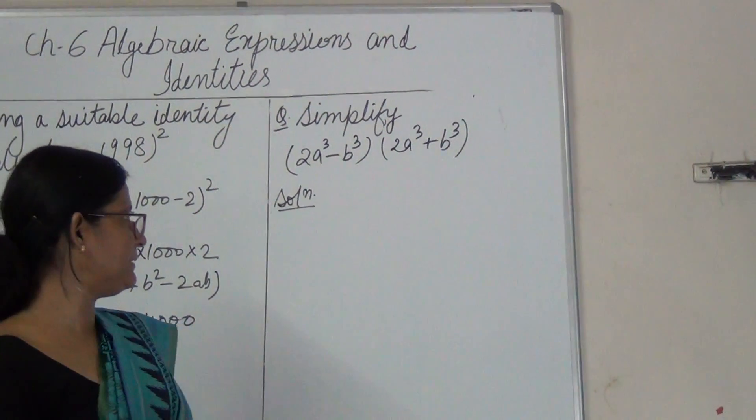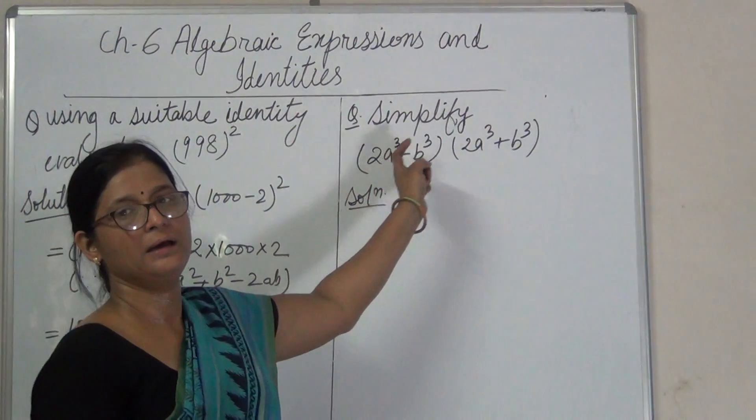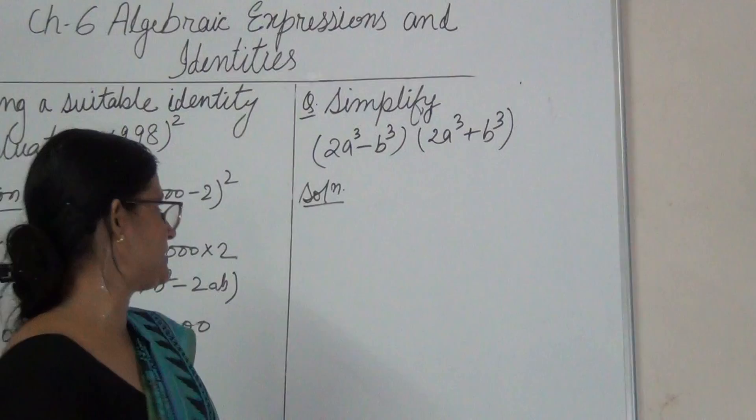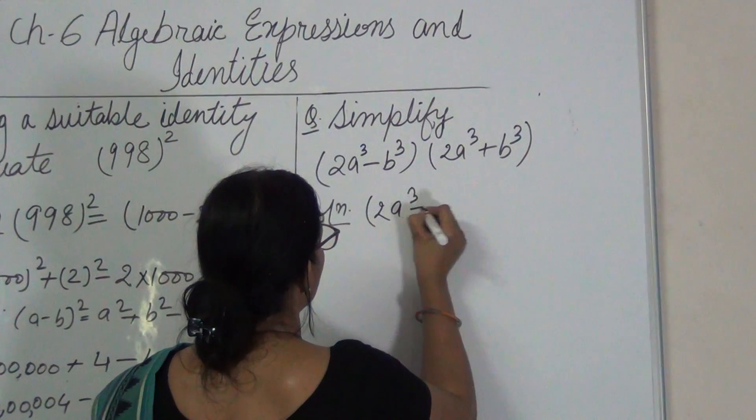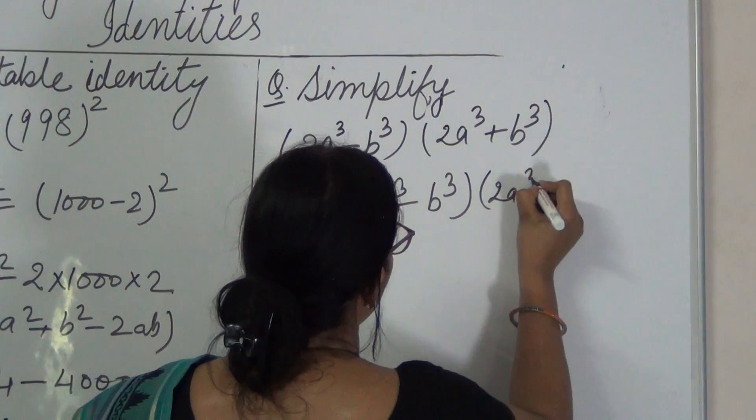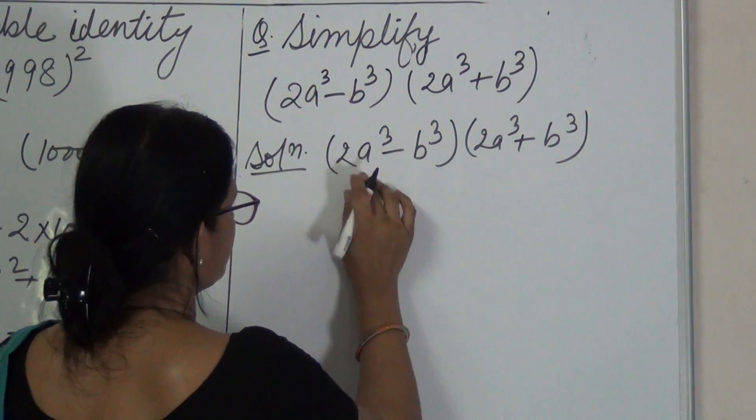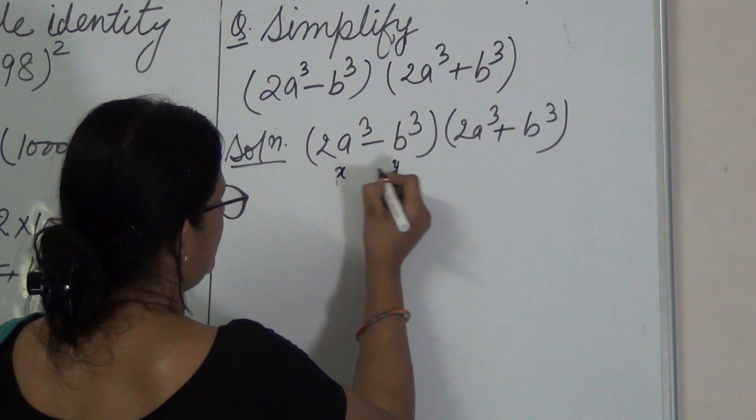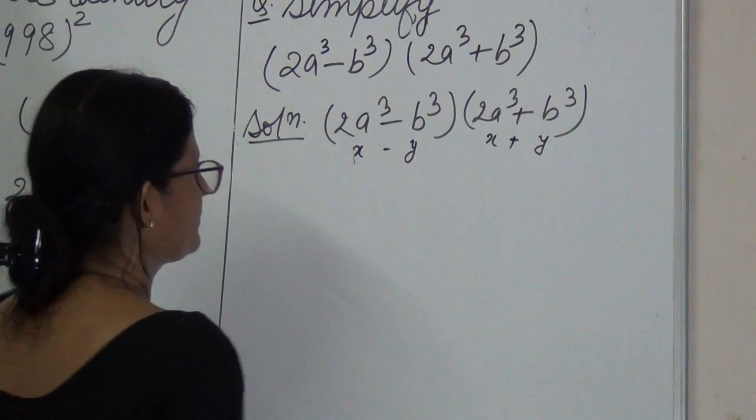Here we see that we have same terms in both the brackets, but in one it is having minus sign and in the other we have plus sign. Let us write 2A cube minus B cube into 2A cube plus B cube. We can assume this as X minus Y into X plus Y.